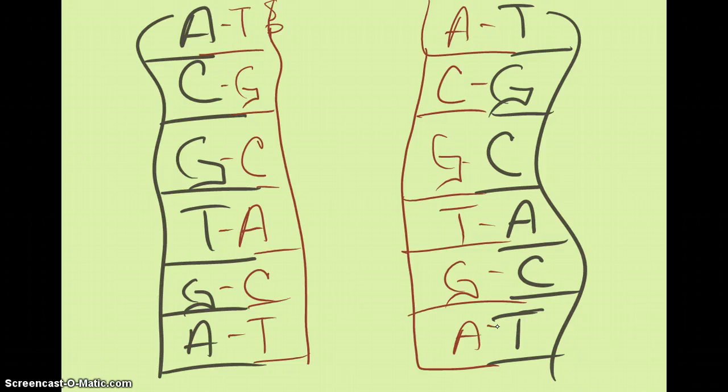So now we have two identical strands of DNA. Now these are going to be connected together at the centromere. So we have our original strand, and then we have our second strand. They're hooked together at the centromere. These are called sister chromatids, and they're absolutely identical.